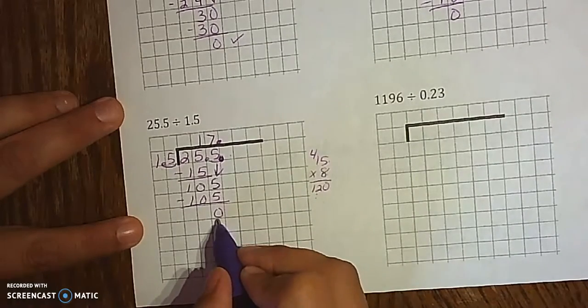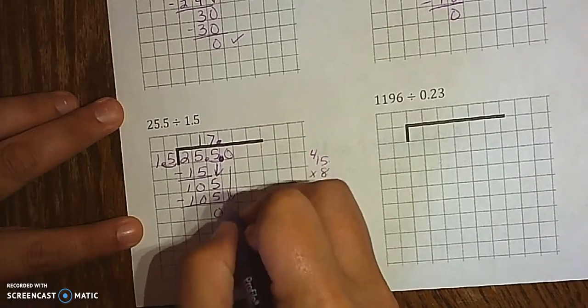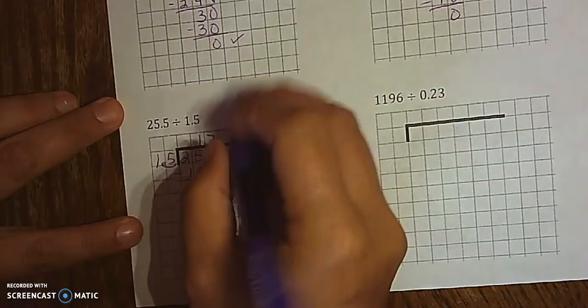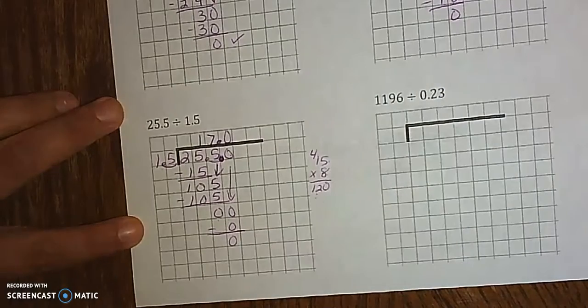but since I have no remainder, I can have an answer of 17, but if it really bothers you, go ahead. Bring down another 0. 15 goes into 0, 0 times, which is 0, and equals 0.